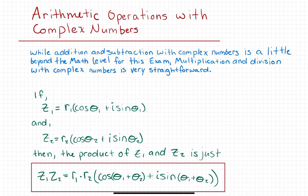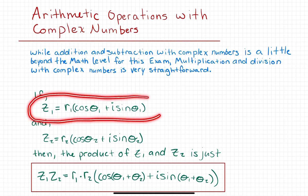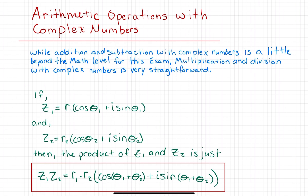While addition and subtraction with complex numbers is a little bit beyond the math level for this particular exam, multiplication and division with complex numbers is actually very straightforward. Let's consider a situation where we're talking about a complex number in polar form: z is equal to r times cosine theta plus i sine theta.